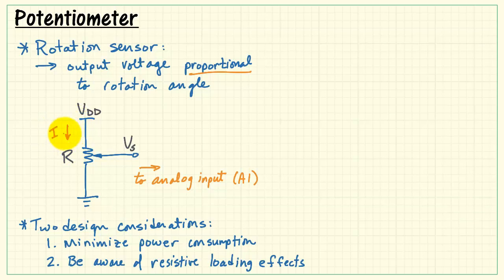If we consider the current that flows from VDD on its way down to ground, that current is VDD divided by R. This is assuming that nothing is connected to the terminal called Vs. The power is the product of voltage and current that would give us the supply voltage squared divided by R.